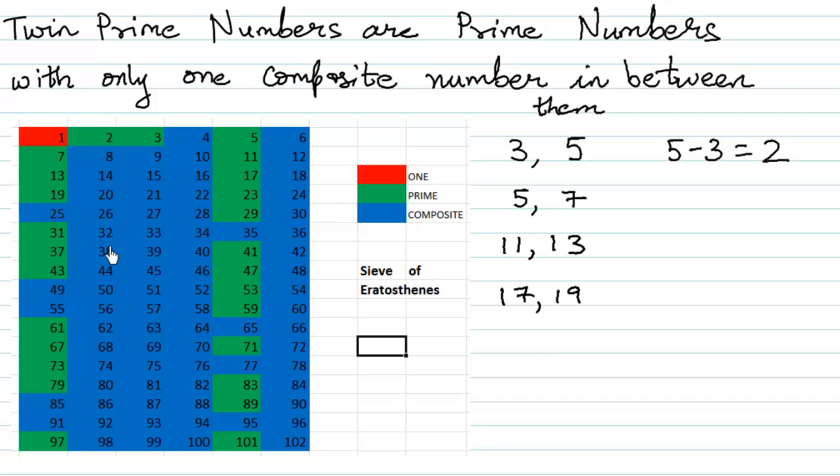What about 29 and 31? Yeah, 29 and 31 are twin prime numbers. That's excellent. And then all the numbers like 41 and 43 are twin prime. Again, if you see 43 minus 41, you will get an answer of 2. So, 43 and 41 are twin prime numbers.